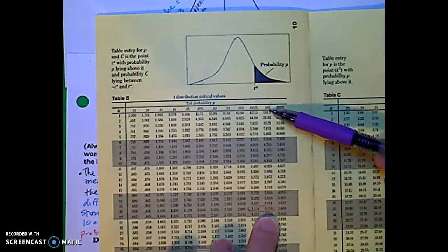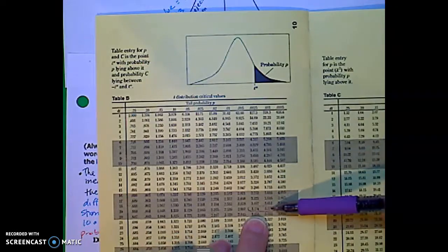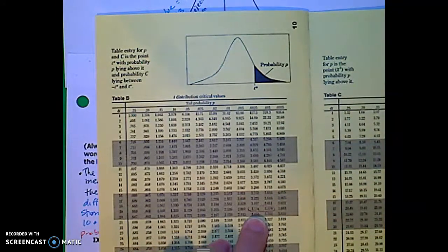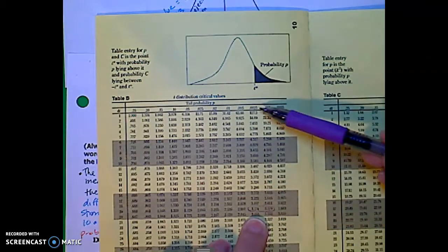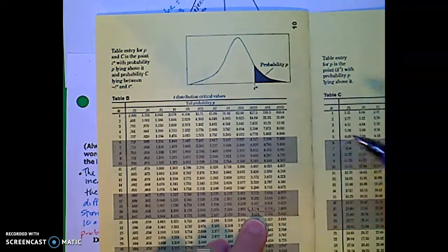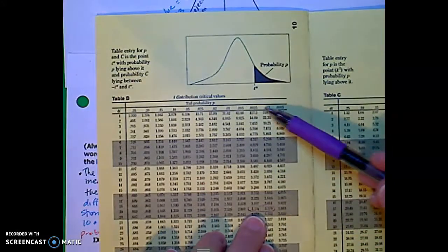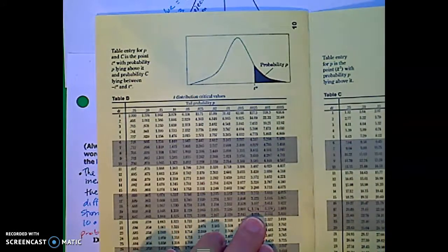Because our t-score of negative 3.49, or the positive value of that, 3.49, is going to fall in between these two values. So right now, or from this table, that's all we can get is a range of values for the p-value. Well, it happens to be enough because, wow, look how small that p-value is, right?